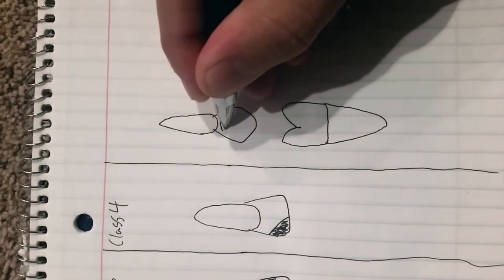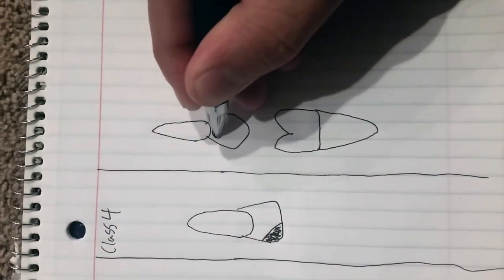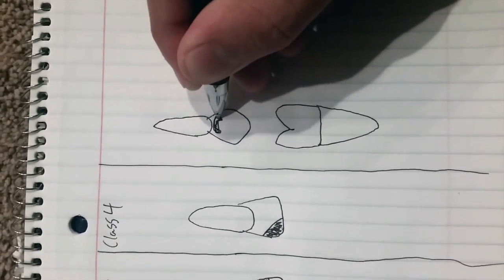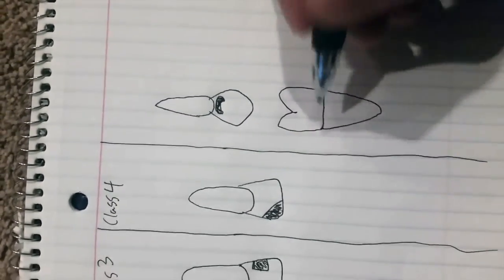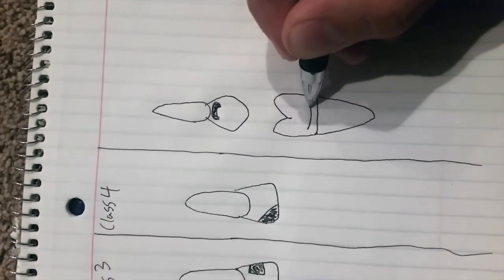So a Class 5 is going to be more in the cervical portion of the tooth, closer to the gingiva. Usually you'll see that on the buccal or facial surfaces of teeth, but you can also see it on the lingual surface, and this can be on any tooth.